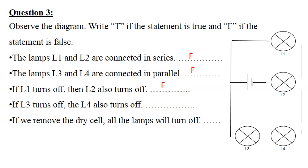Statement four — if L3 turns off, then L4 also turns off. This is true, since in a series connection, if one lamp turns off, the others also turn off. Last statement — if we remove the dry cell, the lamps turn off. This is also true, since the dry cell is the source of electric current in the circuit.